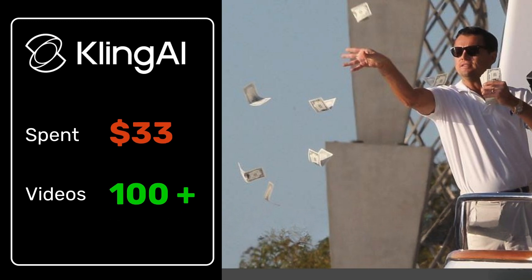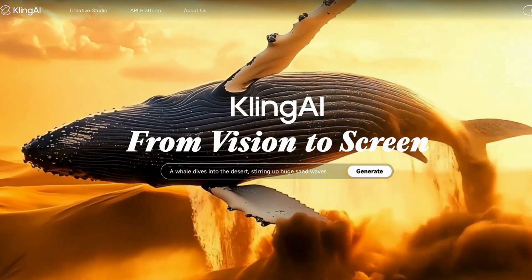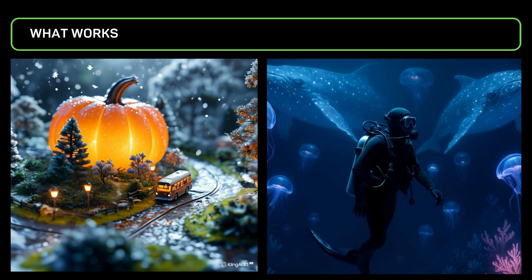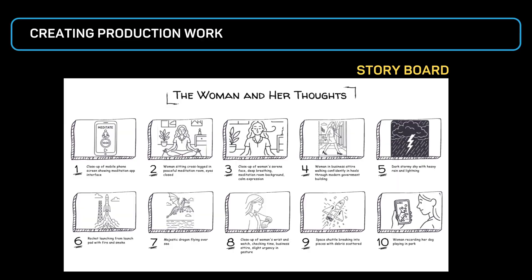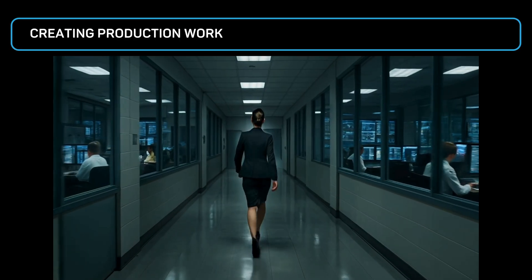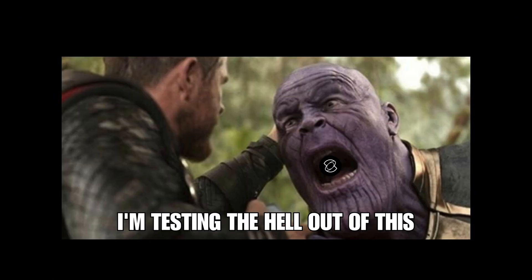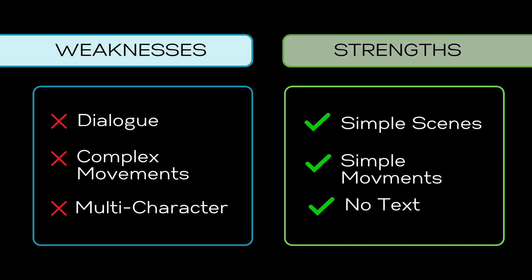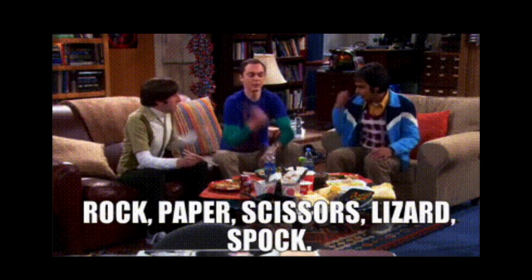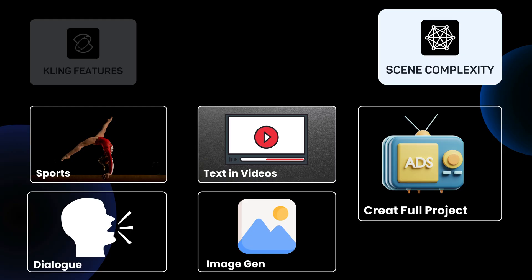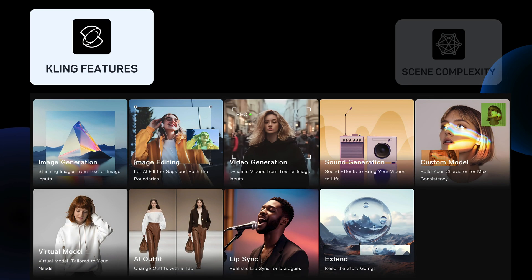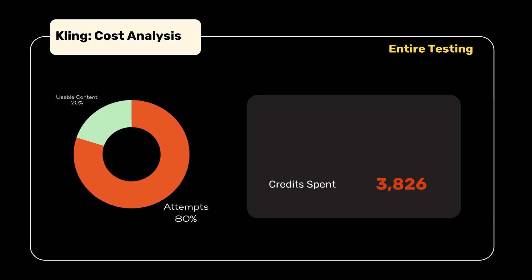I spent $33 testing Kling's 2.1 models — what works, what doesn't — and stress testing with actual production work to show if it's worth your investment. My goal isn't to create pretty demos, but to find the breaking points that matter when you're deciding whether to try this. I tested every single feature, burning over 3,800 credits and generating 100-plus videos for $33 total.